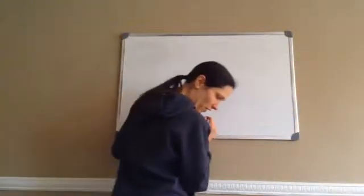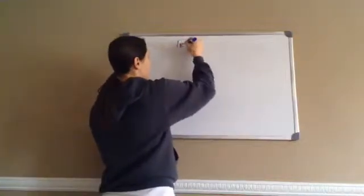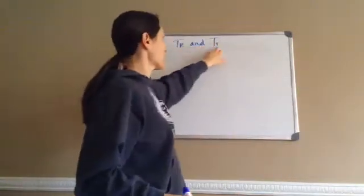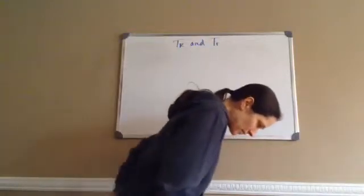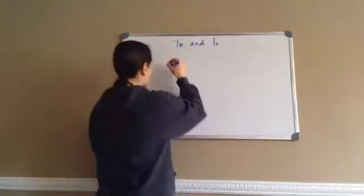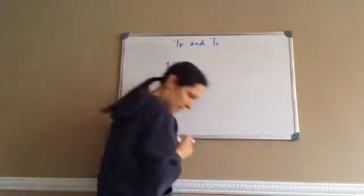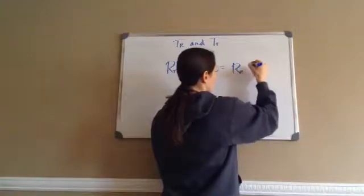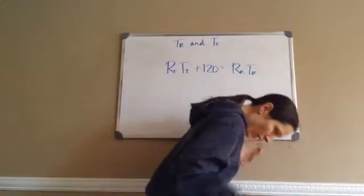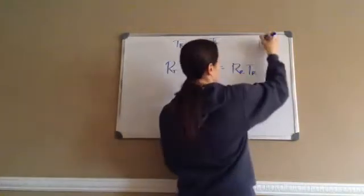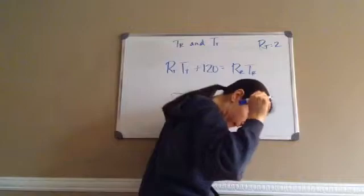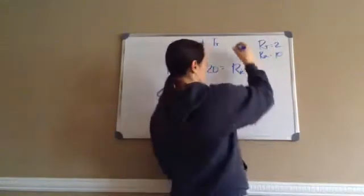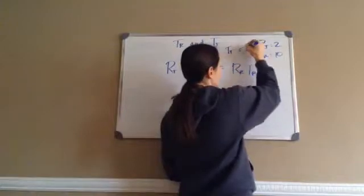This one says: solve the following system of equations for TR and TT — the time of Randy and the time of Tommy. Here's the equation: RT times TT plus 120 equals RR times TR. They tell me RT is 2, RR is 10, and then they give me this: TT equals TR.